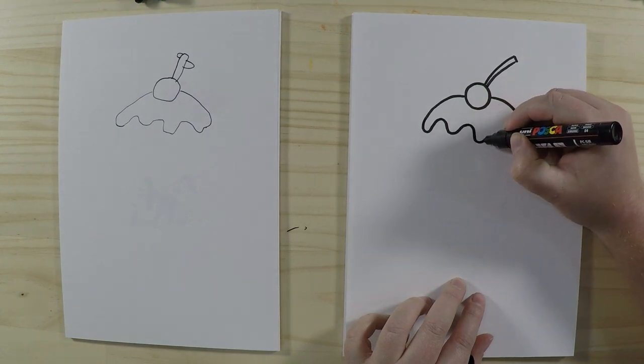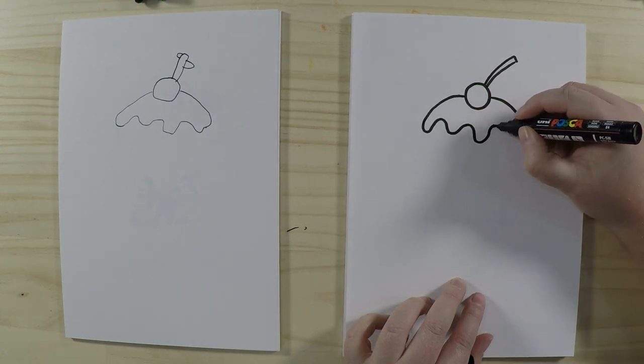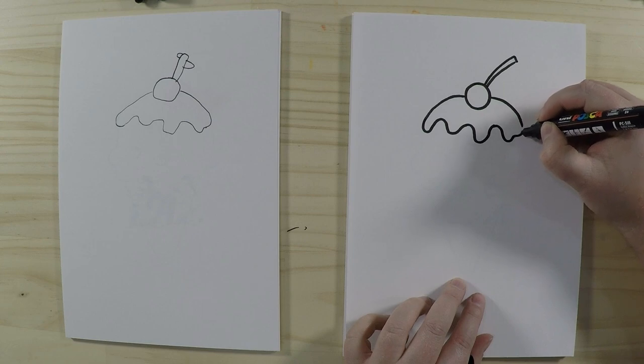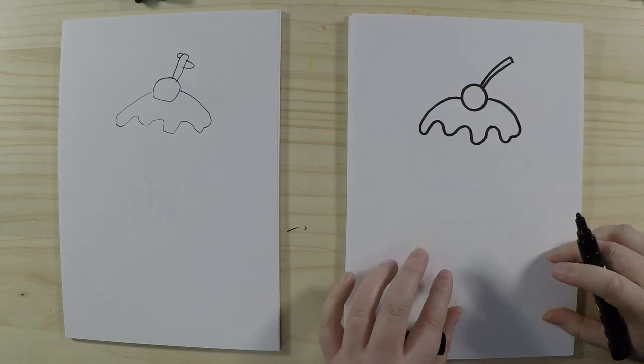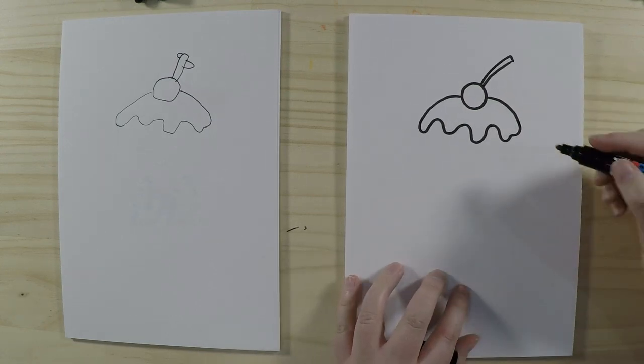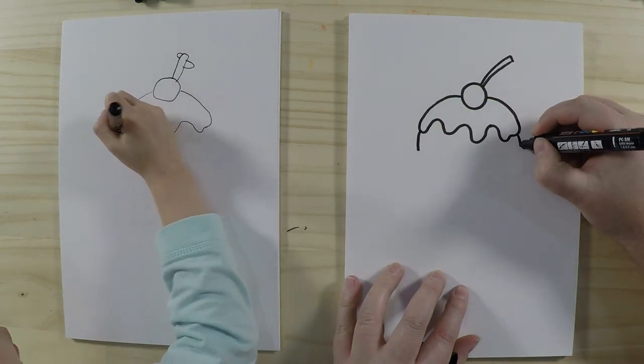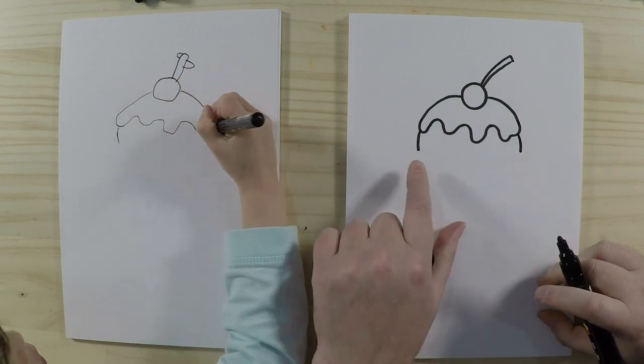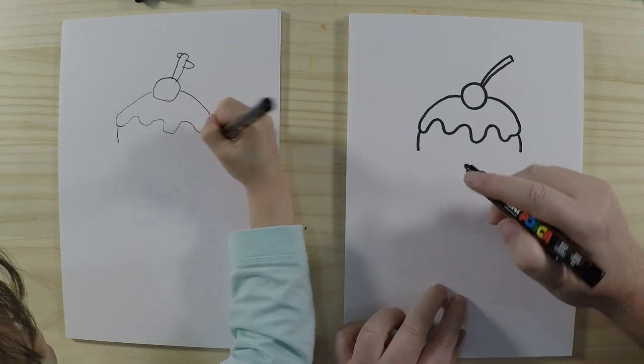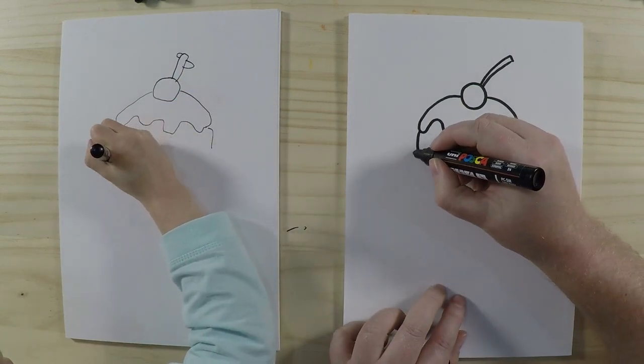And now let's do the ice cream. Yeah, so let's do the ice cream now. We're going to draw two little lines with a bit of a curve on the side here, so this is the side of the ice cream. And then along the bottom here...